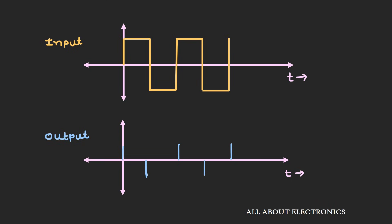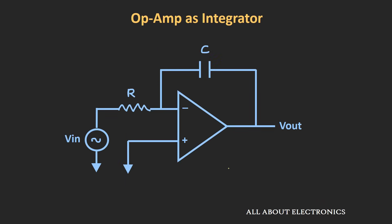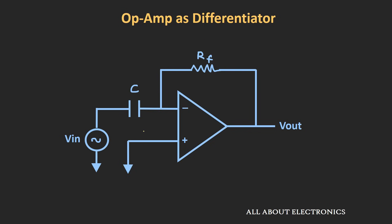Now let's understand how we can design this differentiator circuit using the op-amp. In the last video, we saw how to use the op-amp as an integrator. If we interchange the position of the capacitor and the resistor in that circuit, then the same circuit can be used as a simple differentiator.